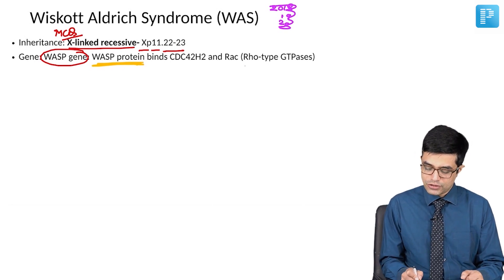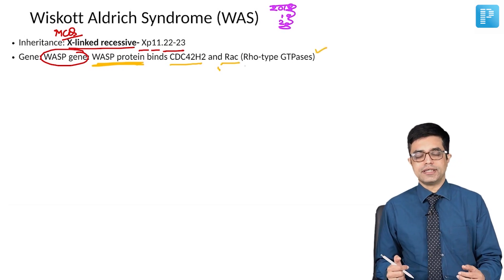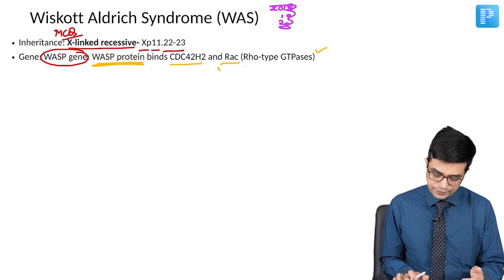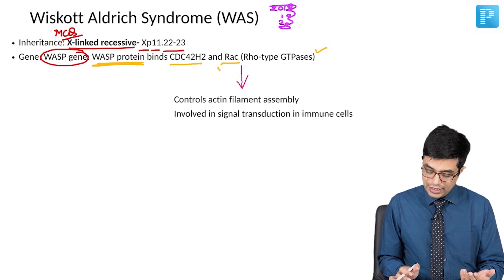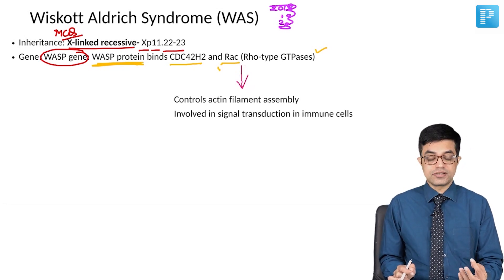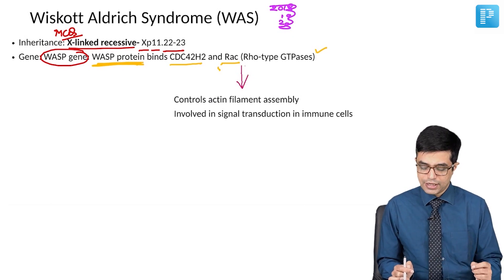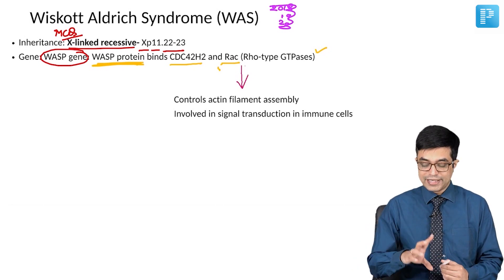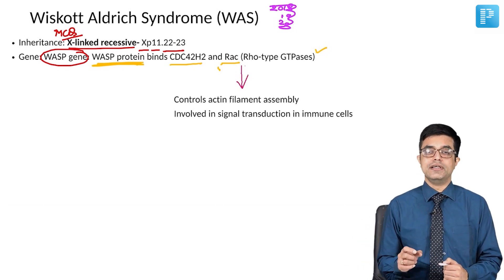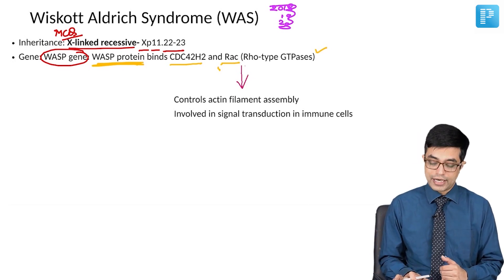WASP protein normally binds to CDC42 and RAC proteins, which are Rho-type GTPases. When WASP binds to them, it controls actin filament assembly and is involved in signal transduction in immune cells. When a WASP gene mutation occurs, actin filament assembly and signal transduction in immune cells are disrupted, leading to recurrent infections — that condition is Wiscott-Aldrich syndrome.